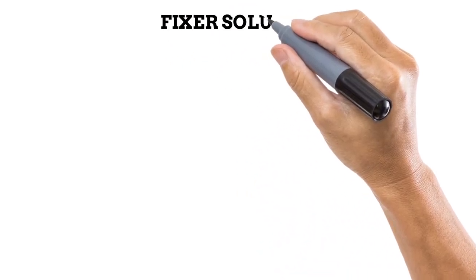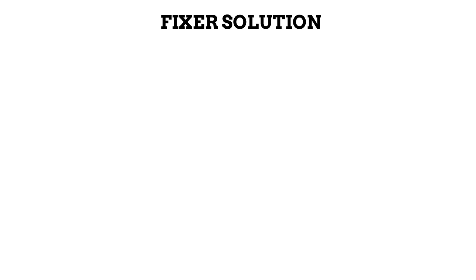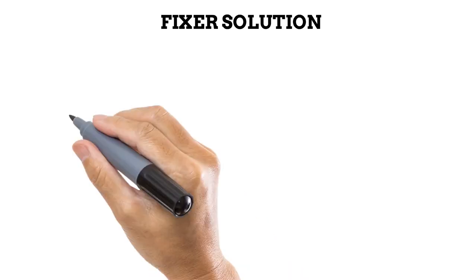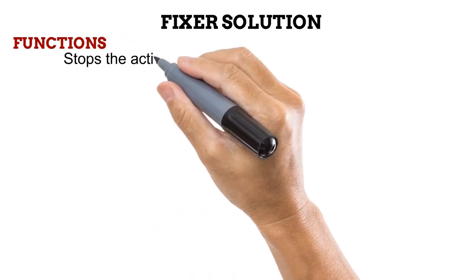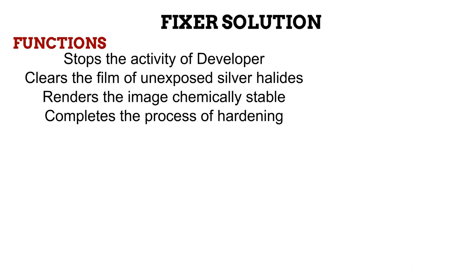After placing the film in the developer solution for a sufficient amount of time, the radiographic image becomes visible. However, an unexposed silver halide grain that was not developed is still sensitive to light, meaning that if a film containing unexposed grains were brought to a light source, the grains would react and the film would be fogged. This is where fixing comes in. Fixing helps to get rid of unexposed silver halide grains by dissolving them out of the solution, leaving only metallic silver that will not react to light. The four known functions of a fixer solution are: to stop the activity of the developer, to clear the film of unexposed silver halide grains, to render the image chemically and photographically stable, and to complete the process of hardening started in the developer solution.